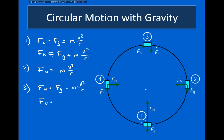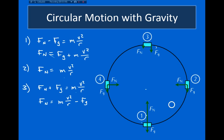This means that the normal force is equal to mv²/r minus the gravitational force. It is this point that determines whether or not an object is moving fast enough to make it through the circular path. If this number is negative, the object won't be able to make it through, because a negative normal force would mean the force is pulling up on the object — but the normal force can only push down against the surface.